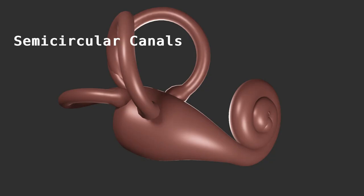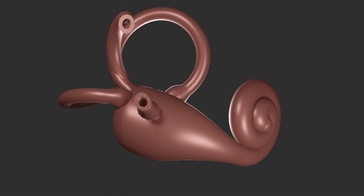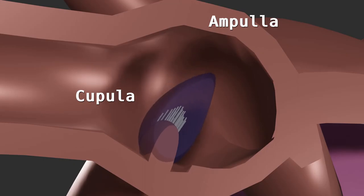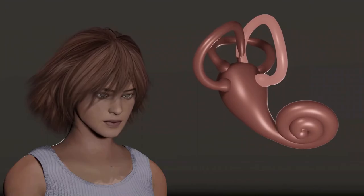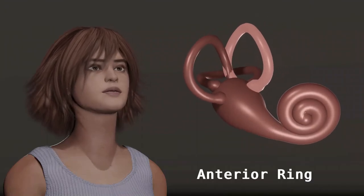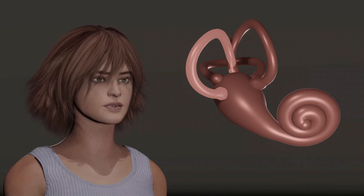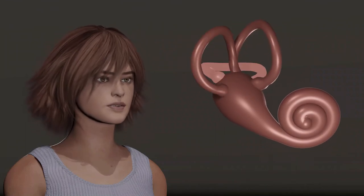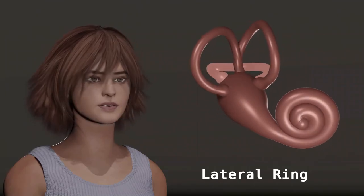Angular acceleration is perceived through the fluid-filled semicircular canals. Each canal, or ring, has a dilated area near the vestibule known as the ampulla. Within the ampulla is another hair cell structure, the cupula. The cupula hair cells are deflected by fluid movement in the canals. Angular acceleration, or tilt, in the sagittal plane is detected by the anterior ring. Acceleration in the coronal plane is detected in the posterior ring. And acceleration in the transverse plane is detected in the lateral ring.